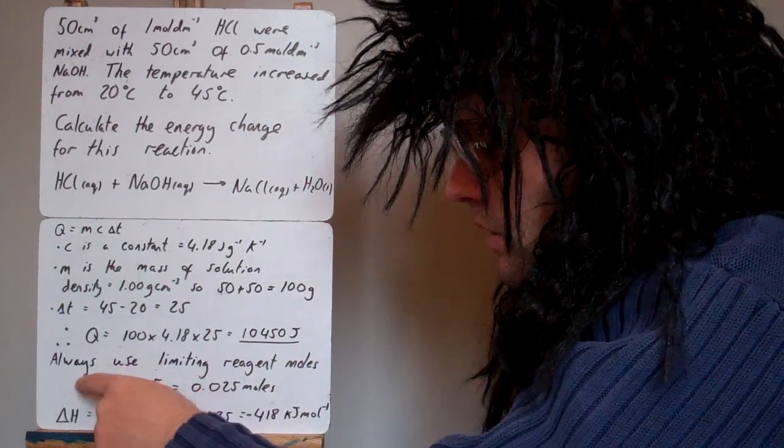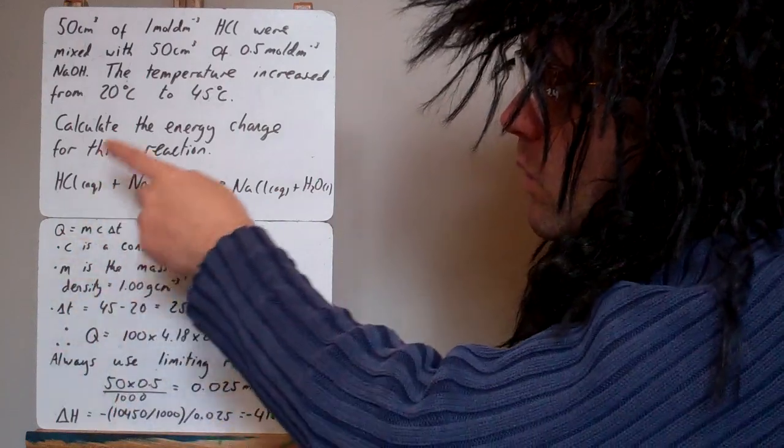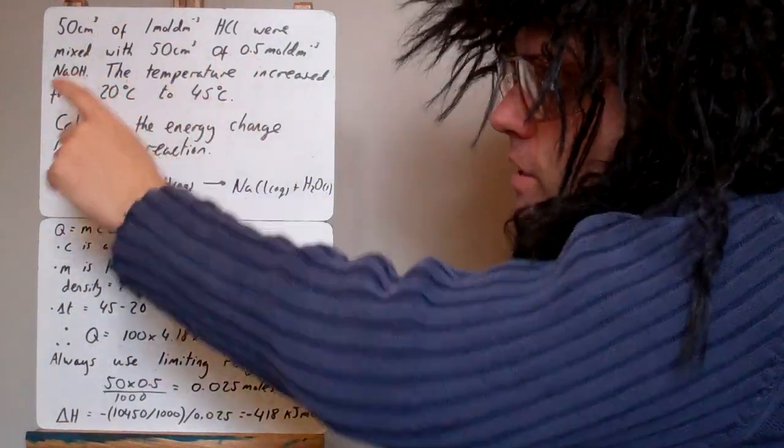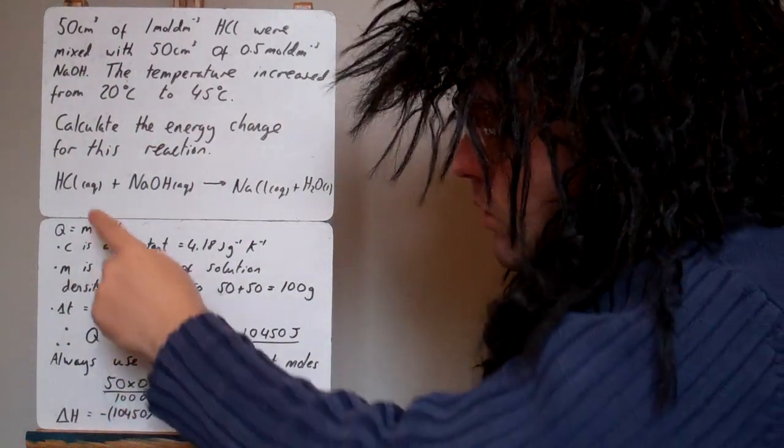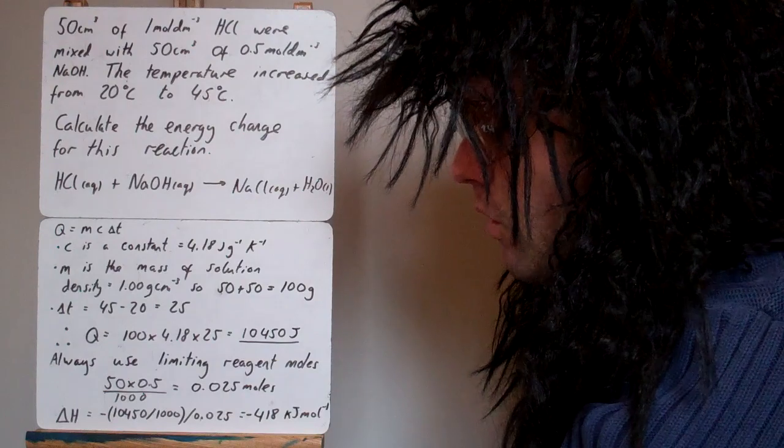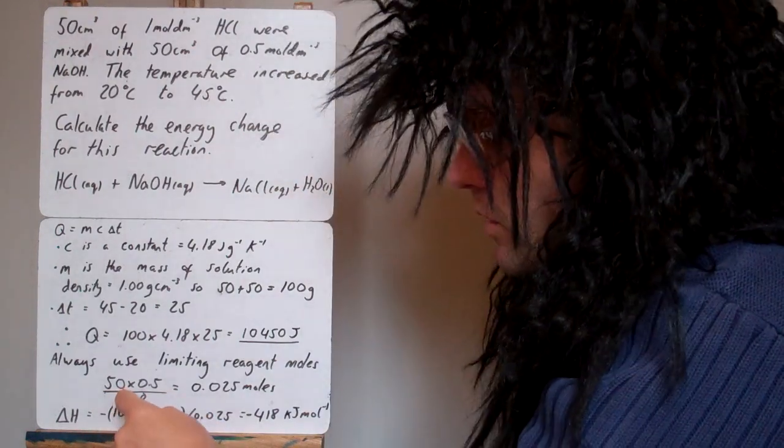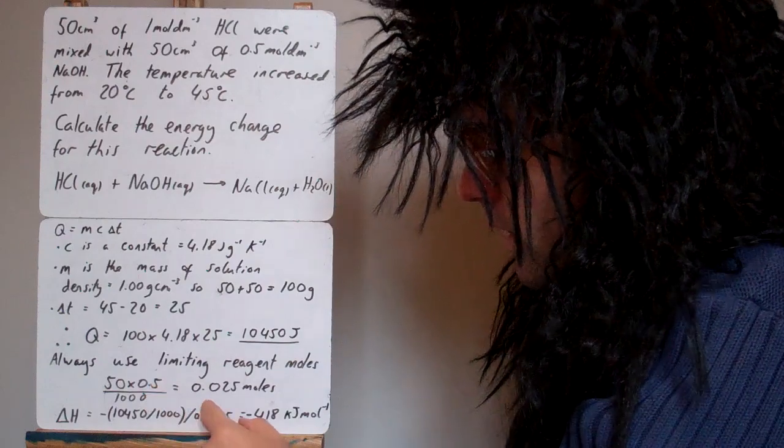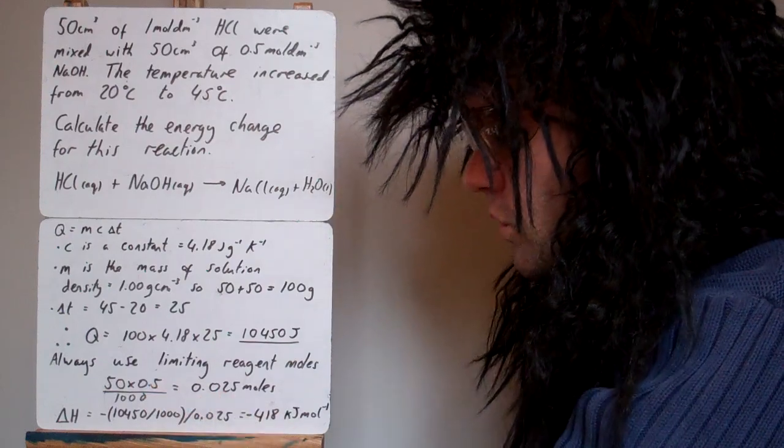So we now want to work out delta H. We've got to look back and see which was the limiting reagent. Well, we've had equal volumes, but half the concentration of sodium hydroxide, and they react one to one. So the sodium hydroxide was the limiting reagent, and the number of moles we had, we work that out by doing the volume over a thousand times by the concentration, that gives us 0.025 moles.